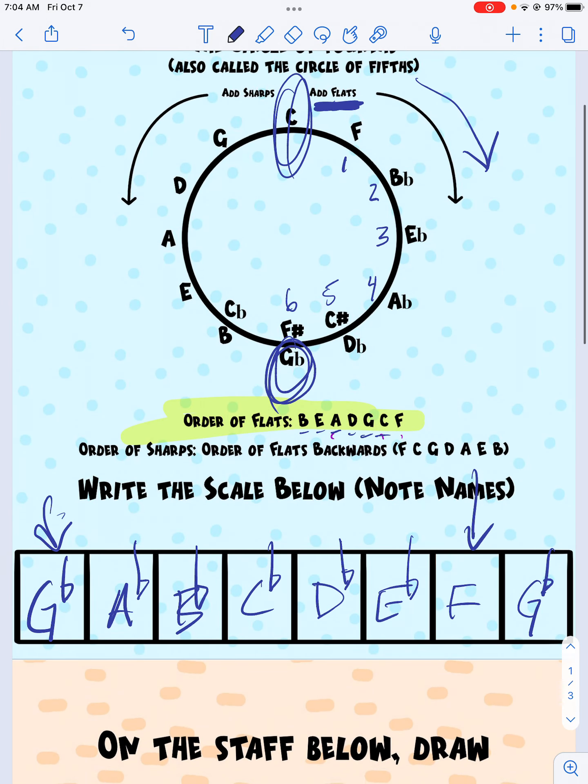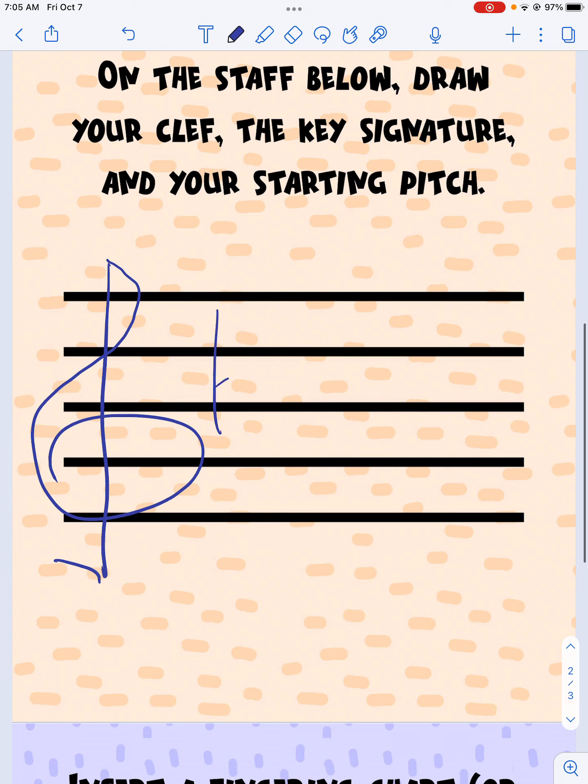And then, again, the order of flats was up here on this page, right there, B, E, A, D, G, C. We want that to go in order from left to right when we draw a key signature. B, E, A, D, G, C. All right, again, so that order of flats is always the same, B, E, A, D, G, C. If there was an F, we'd go here. So in order, left to right, got my key signature.